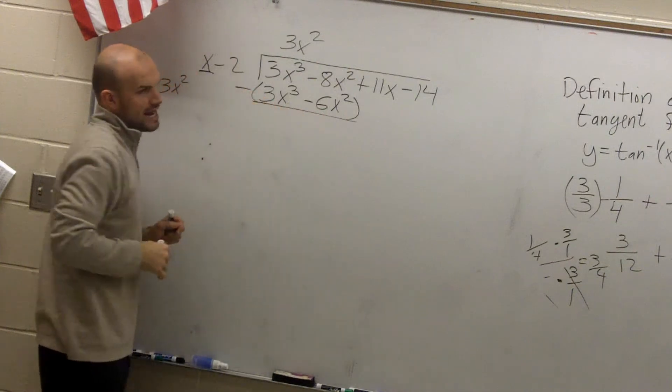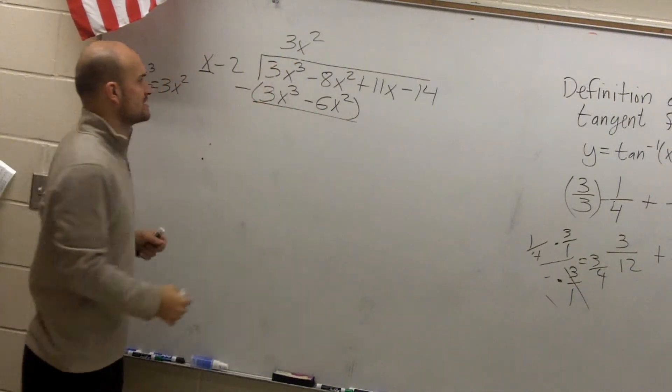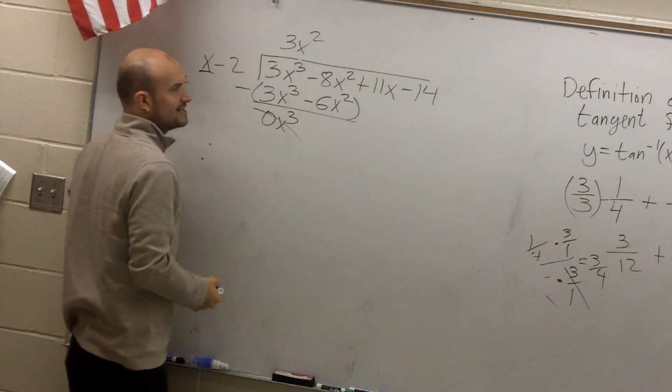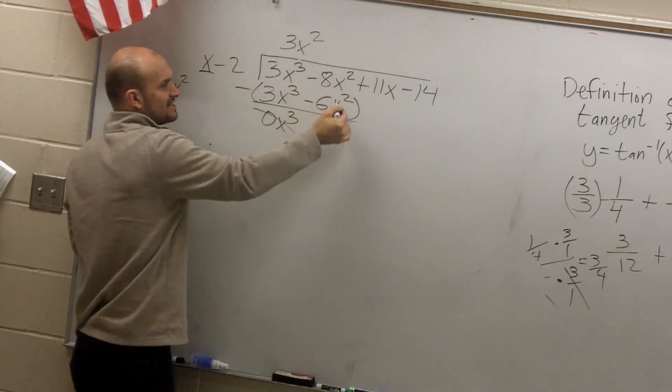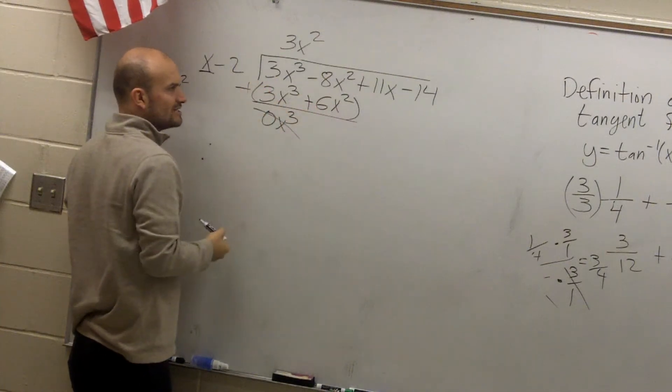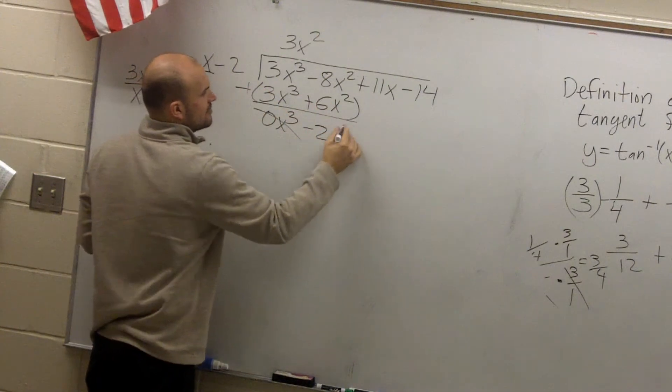Parentheses, subtract. 3x cubed minus 3x cubed is 0x cubed. It multiplies to 0. Negative 8x squared minus a negative 6x squared. Double negative turns to a negative 2x squared.